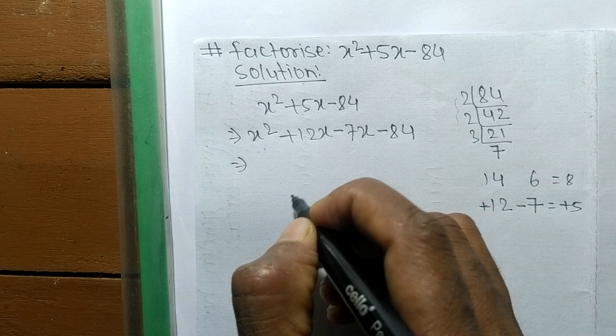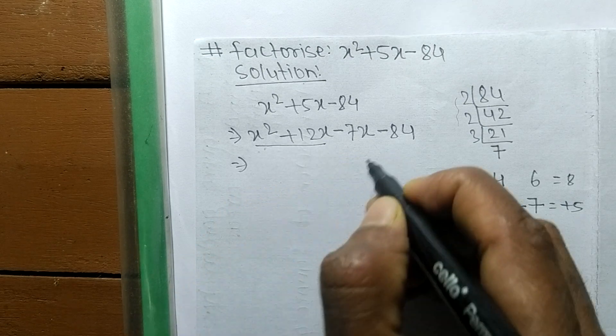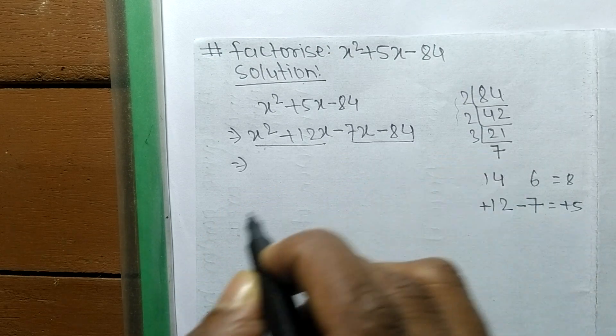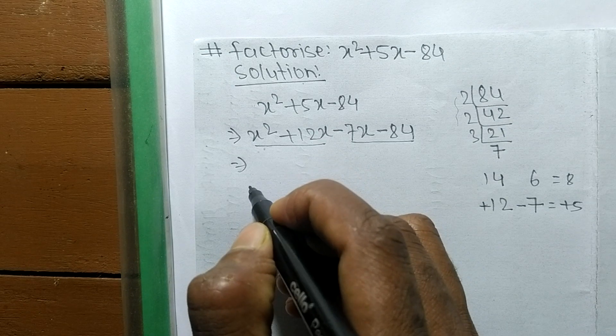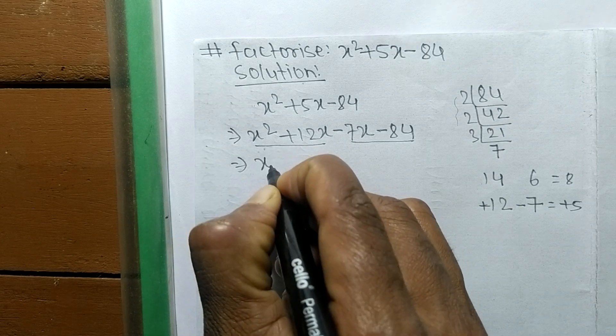In the first pair, the common part is x, and the remaining is (x + 12).